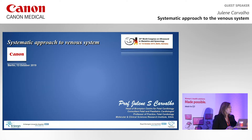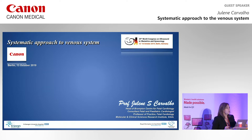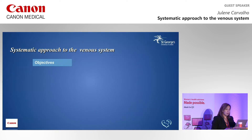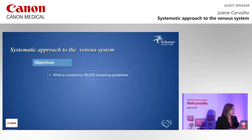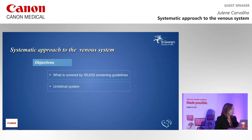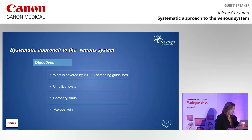I chose a topic of a systematic approach to the venous system because a lot of problems we encounter these days with screening for heart abnormalities at the 20-week scan - we may come to see structures that you're not so used to. I'm going to cover what is covered by these four guidelines in terms of venous structures, venous return to the heart, and then add other things - some of which you are familiar with, like the umbilical system. Being obstetricians, most of you, we'll talk a little bit about the coronary sinus, the azygous vein, and the innominate vein.